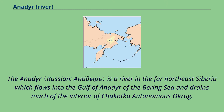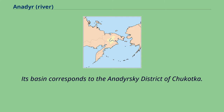The Anadyr is a river in the far northeast Siberia which flows into the Gulf of Anadyr of the Bering Sea and drains much of the interior of Chukotka Autonomous Okrug. Its basin corresponds to the Anadyrsky district of Chukotka.